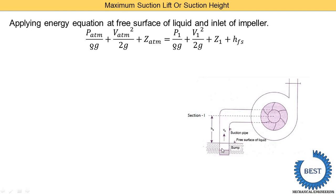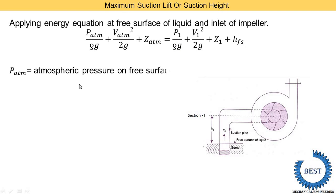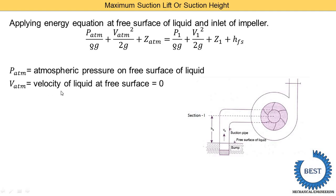When water is supplied from the sump to the impeller through the pipe, there are friction losses. So energy is reduced at the inlet of the impeller, and we add this loss term hfs. Now, v_atmosphere is the velocity of the liquid at the free surface of the sump — since the water is stationary in the sump, v_atmosphere is considered zero, so that term is zero.